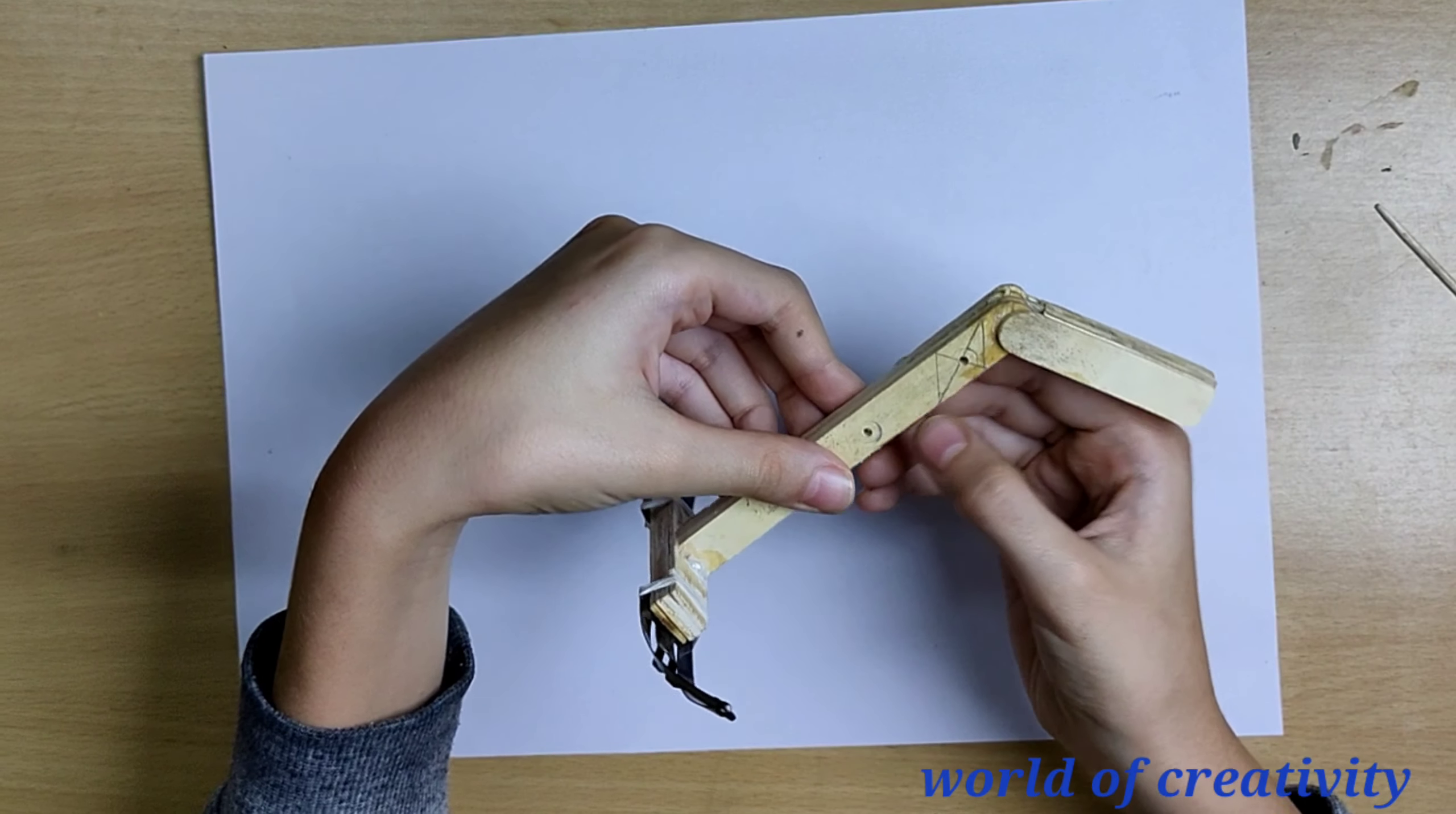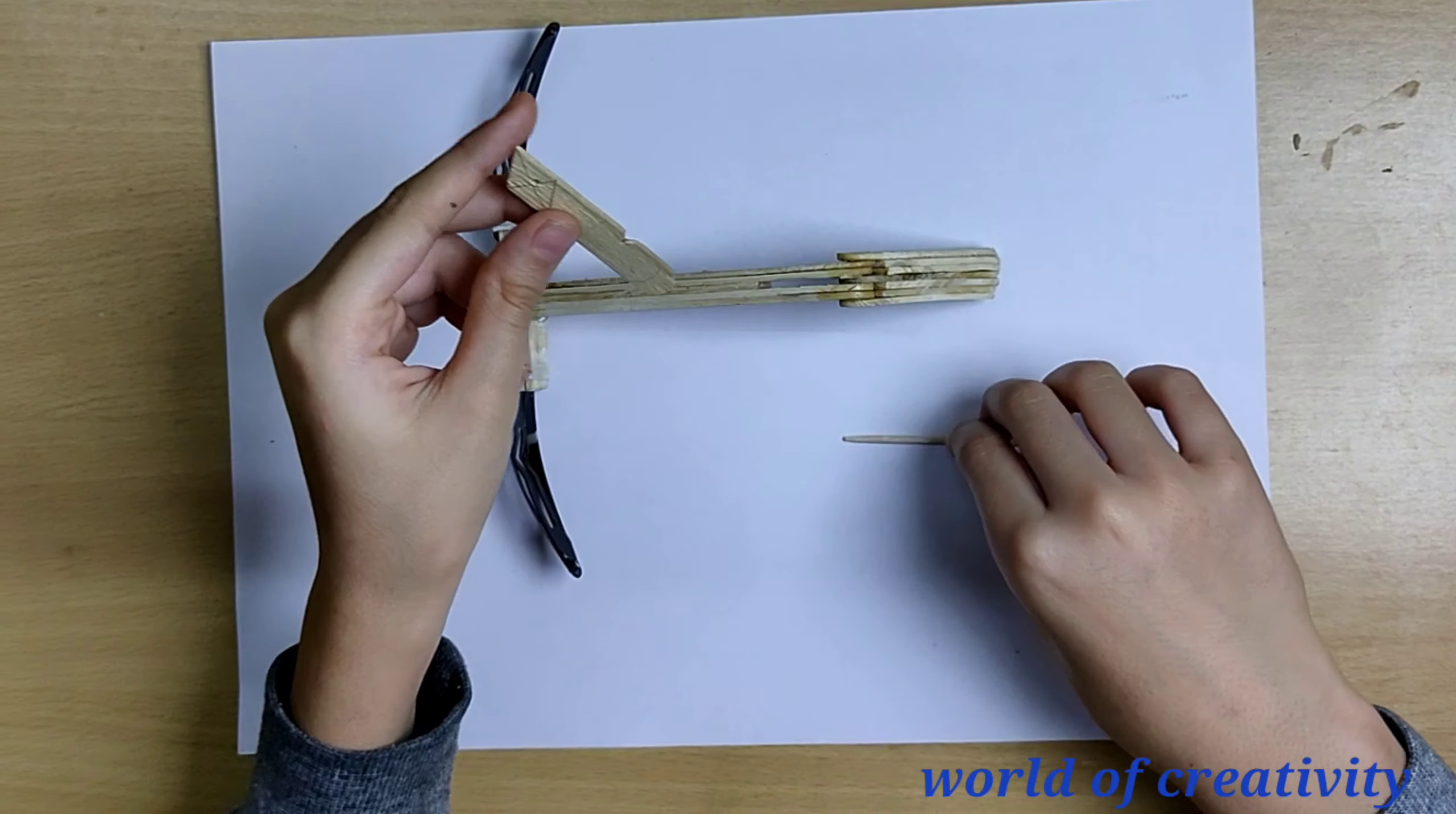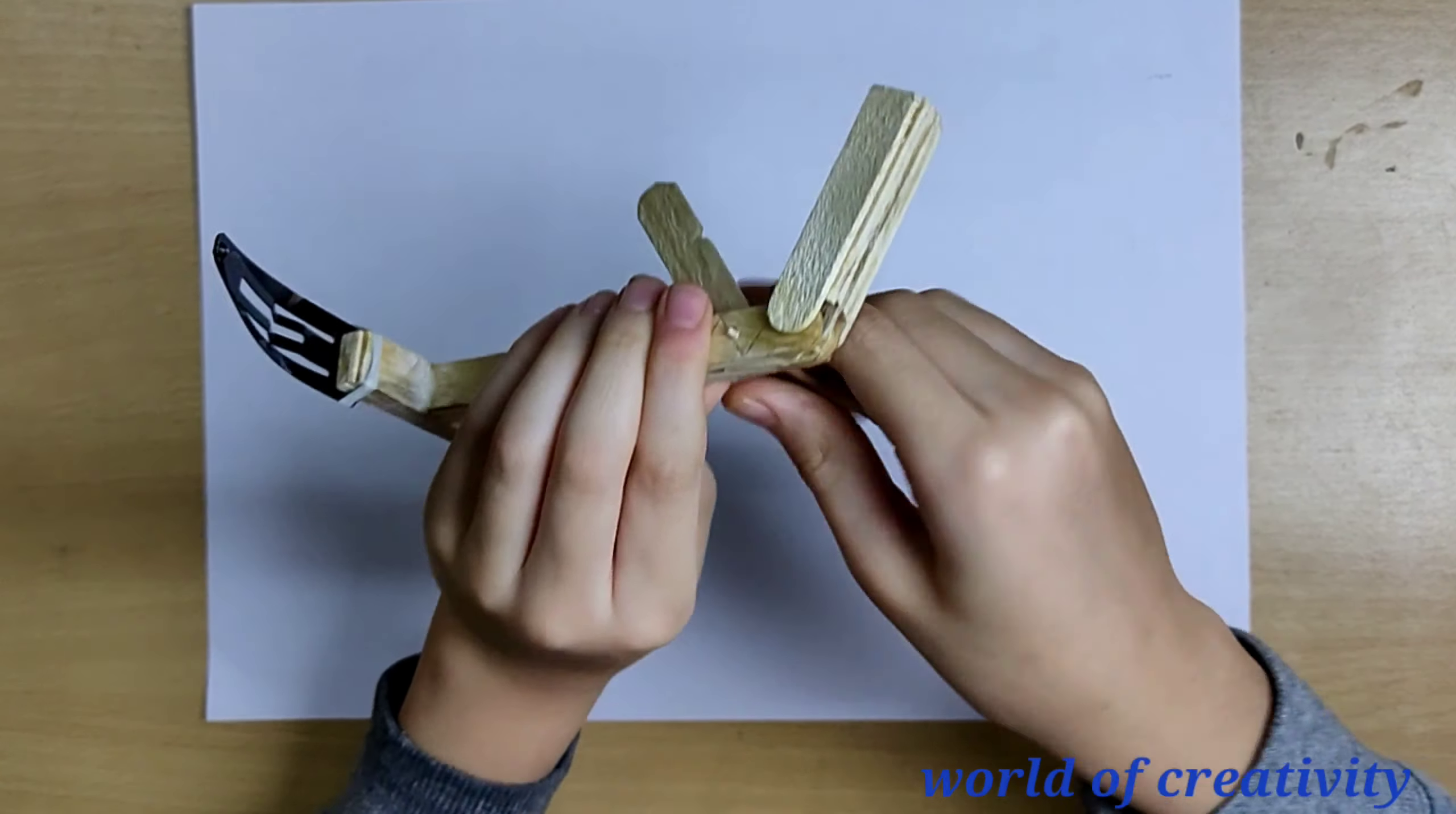Now get two holes drilled, and now we have to drill a hole in the trigger also. This will act as a trigger. Now we are going to attach the trigger with the help of a toothpick in this slot.